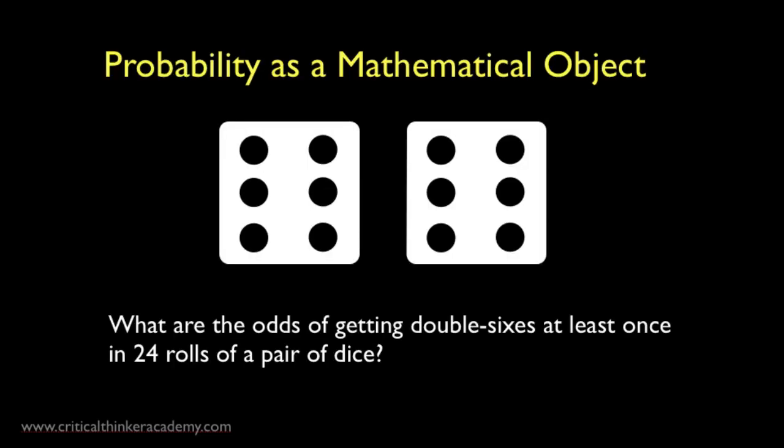The first thing to note is that modern probability theory is really a branch of mathematics. The first formal work on the subject is from the 17th century in France by mathematicians Pierre de Fermat and Blaise Pascal.